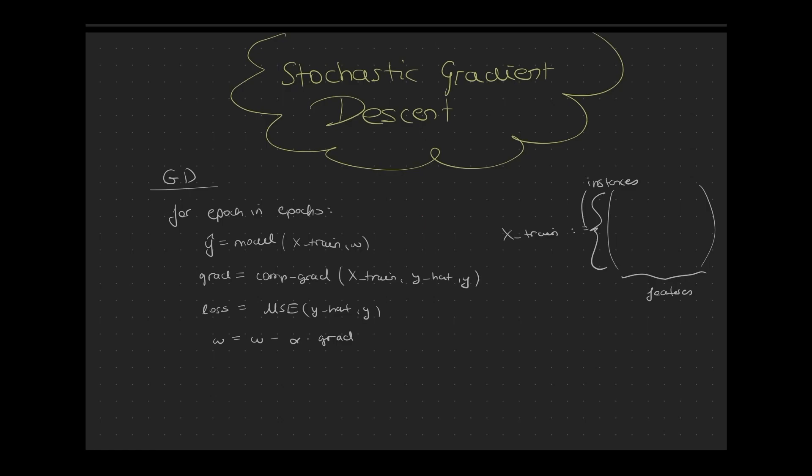In these cases we can opt out from using Gradient Descent and we can use Stochastic Gradient Descent. With Stochastic Gradient Descent we can trade off achieving faster iterations in exchange for a lower convergence rate.